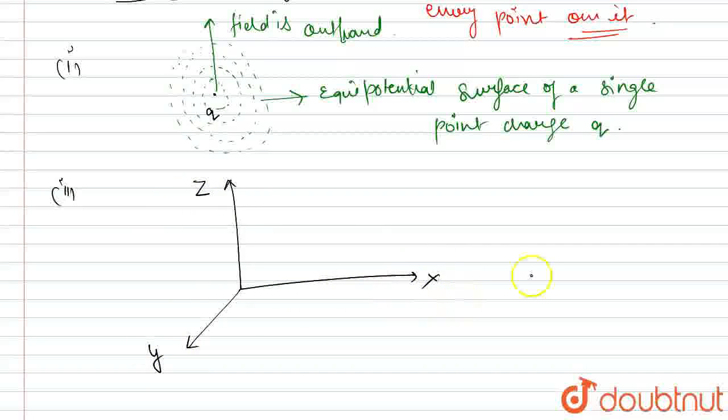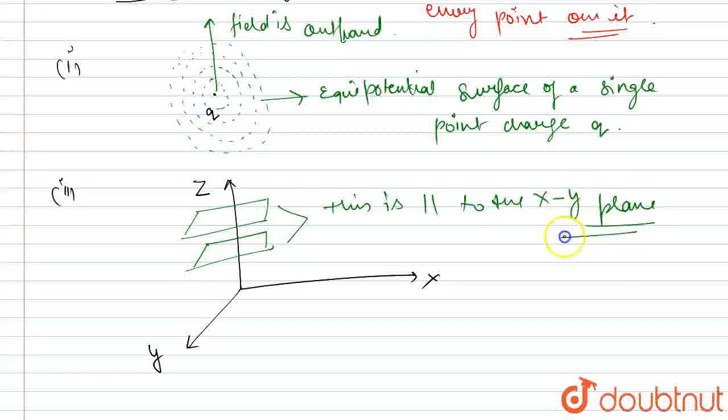So, in the equipotential surface, the plane, the plane is parallel to the, this is parallel to the XY plane. So this equipotential surface in Z direction is parallel to the XY plane of the surface.